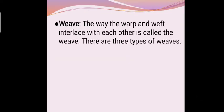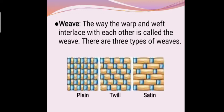Now let's see what is weave. The way the warp and weft interlaced with each other is called the weave. There are three types of weaves: plain weave, twill and satin weave. Students now there is one video which will show you the process of weaving. Let's watch this video.